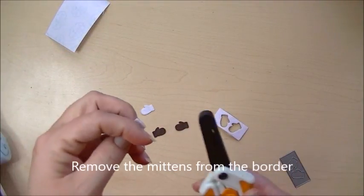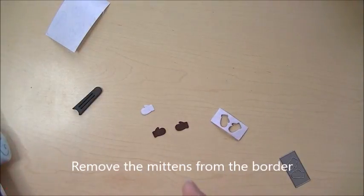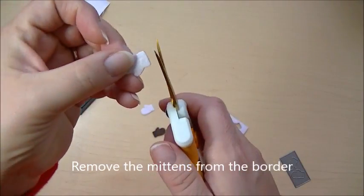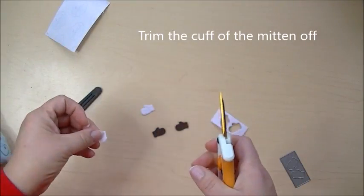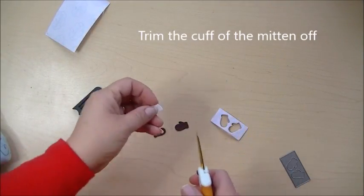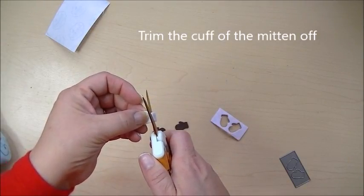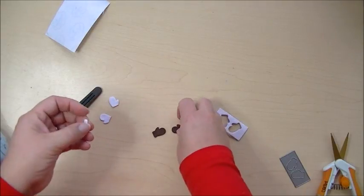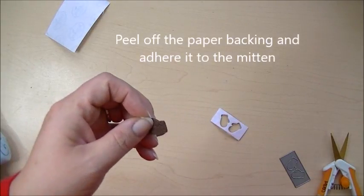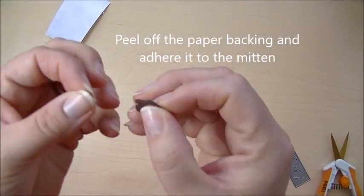And then what I'm going to do is take a pair of scissors, and I'm just going to clip just the edge here because that's the part of the cuff that I want to highlight on my little mittens. So I'm going to cut just the edge here, and then I'm going to take this part.